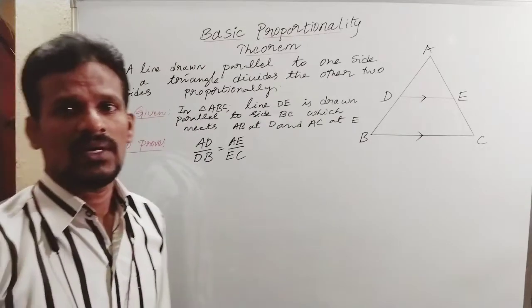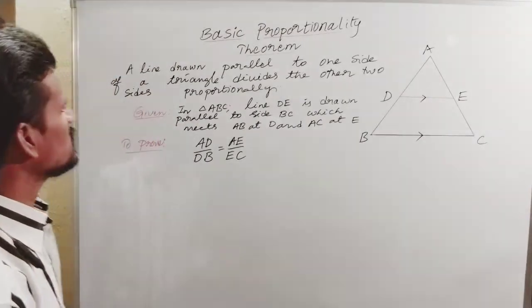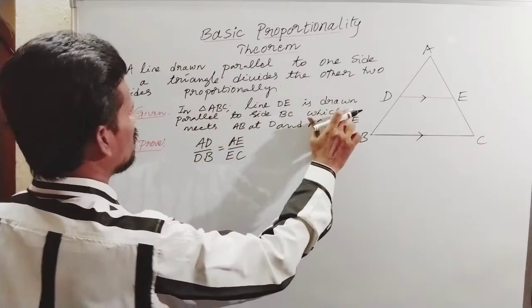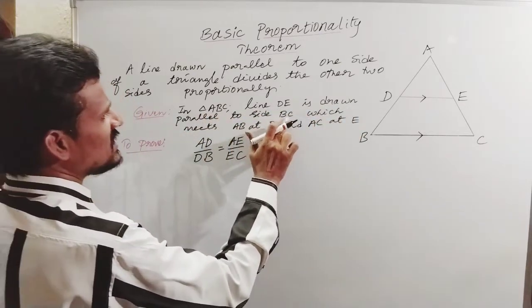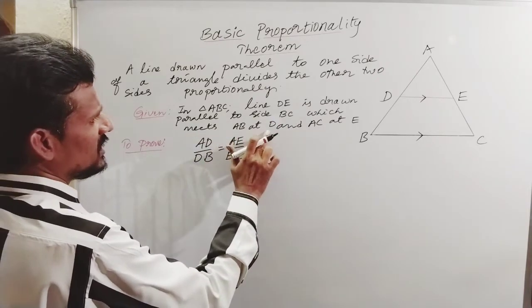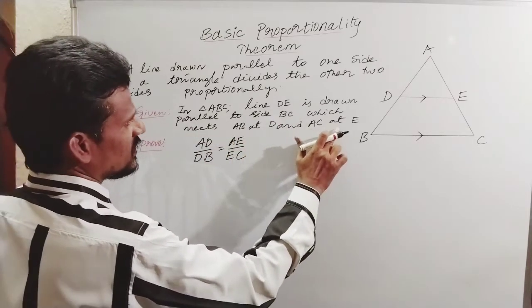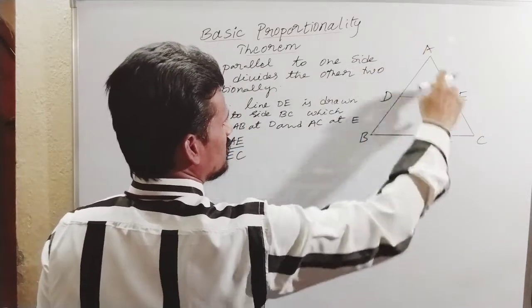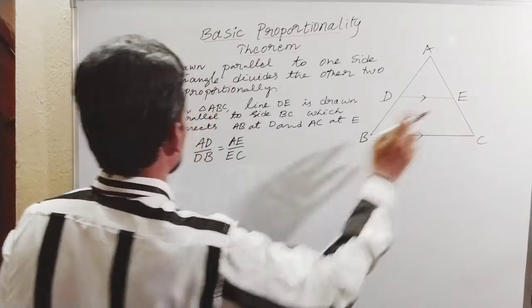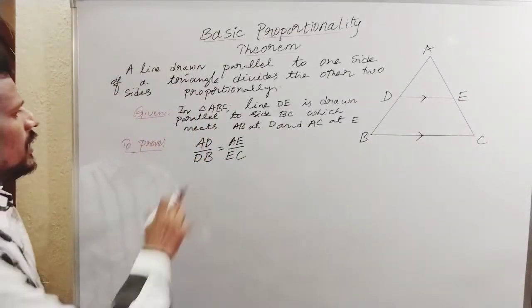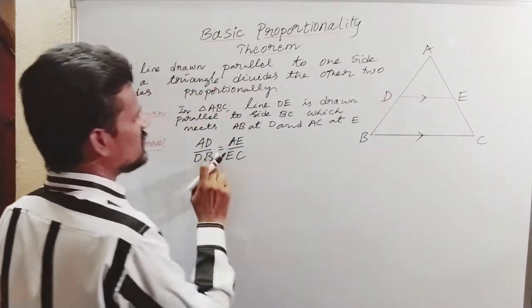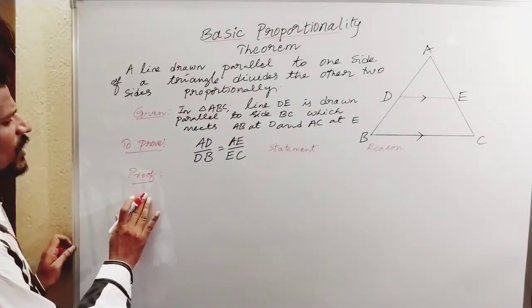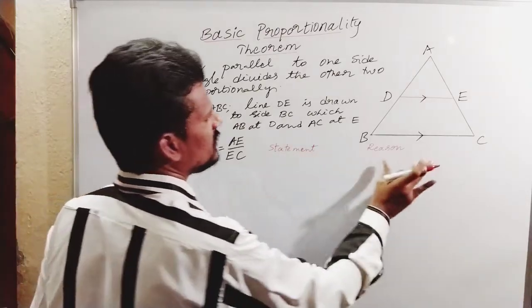So we have to prove that. First, we write what is given. Given: in triangle ABC, line DE is drawn parallel to side BC, which meets AB at D and AC at E. So what we have to prove? AD/DB is equal to AE/EC. For that proof, we have to write a statement and reason.